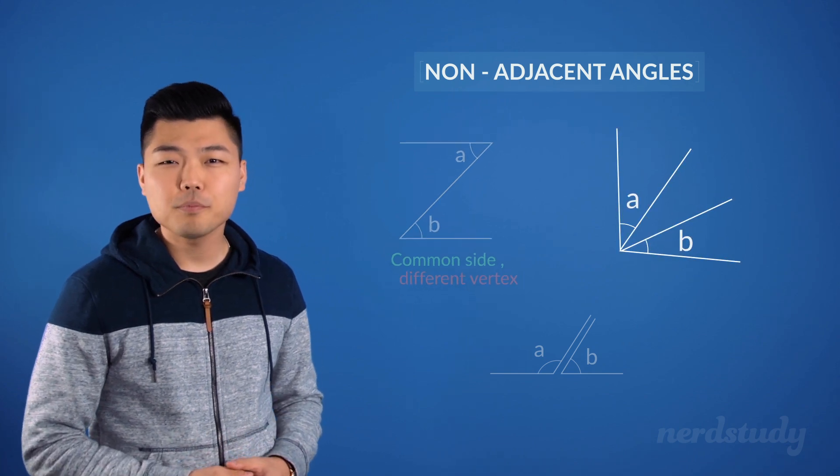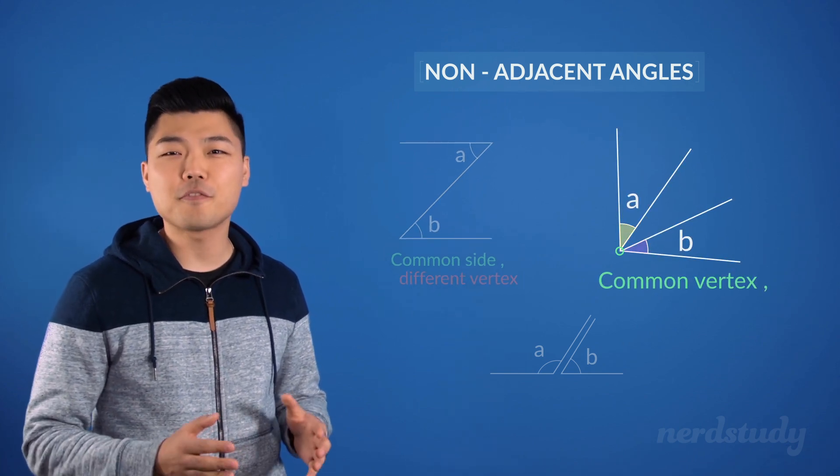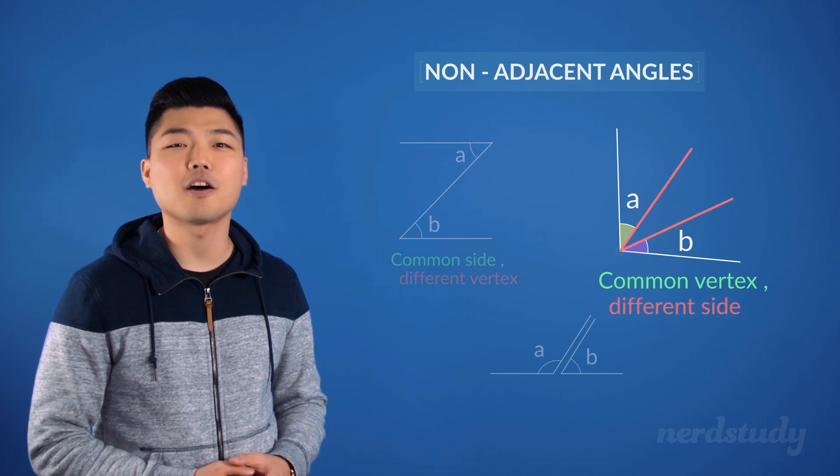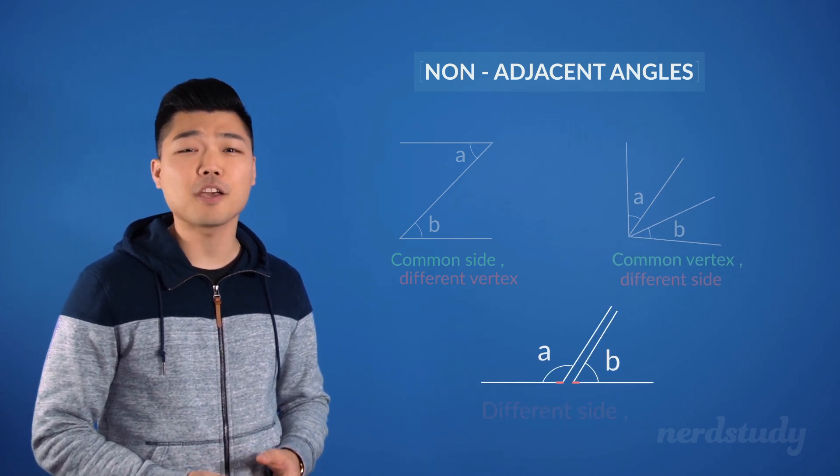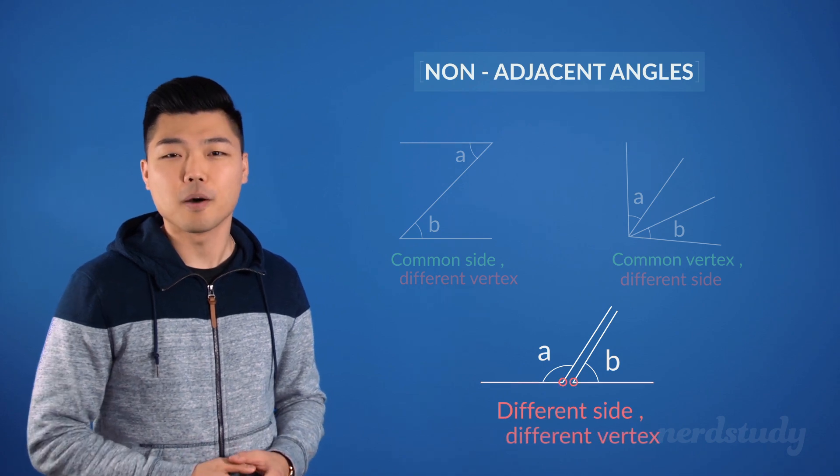And for this example, we see that they share a common vertex, but not a common side. Lastly, this one does not share either a common side or a common vertex.